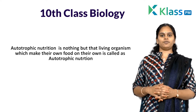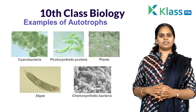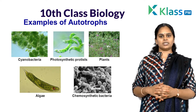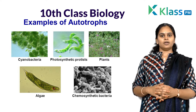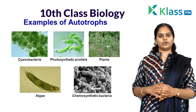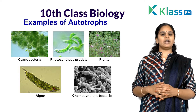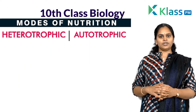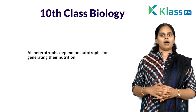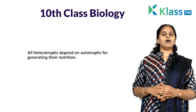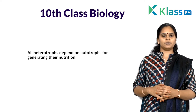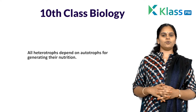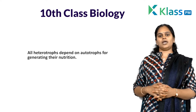The best example for autotrophs is plants. The majority of plants generate their own food by photosynthesis — we will come across photosynthesis and where it happens in the next session. Coming to heterotrophic nutrition, all heterotrophs depend on autotrophs for generating their own food, from single-cellular organisms to multicellular organisms.